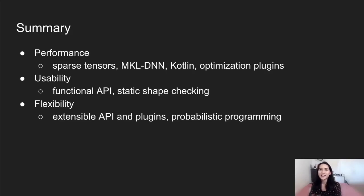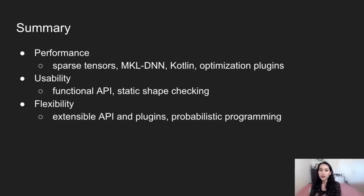I started this talk saying that what we're doing really comes down to performance, usability, and flexibility. For performance, we saw the benefits from sparse tensors, MKL-DNN, being in Kotlin, and our optimization plugins. With regards to usability, we talked about our functional API and our static shape checking plugin. For flexibility, our API was extensible and customizable, and the shape checking plugin was extensible as well. We also touched on our collaboration with Bean Machine, a probabilistic programming system.